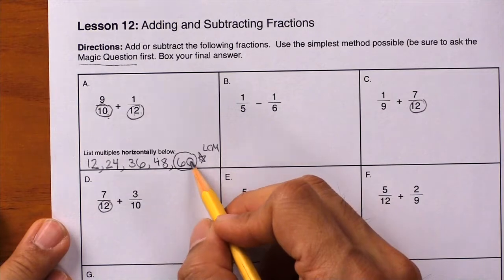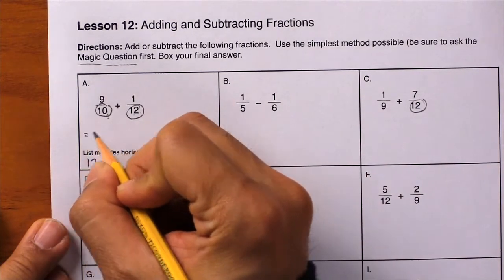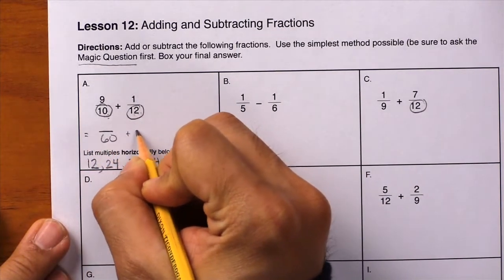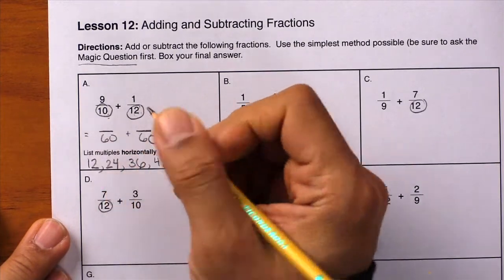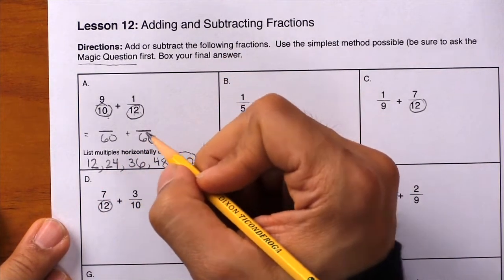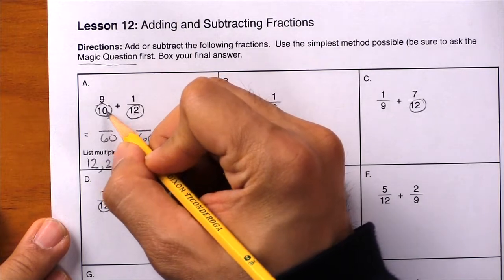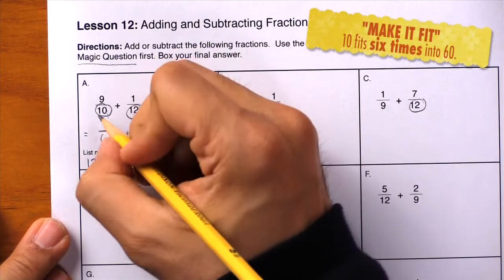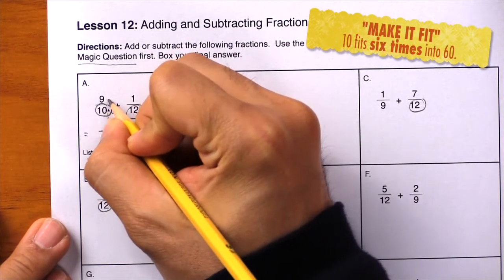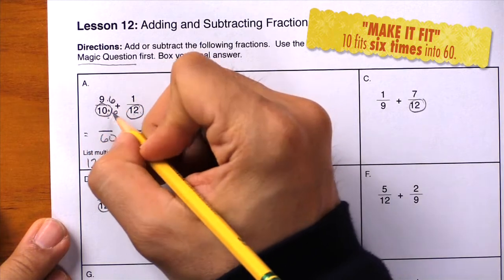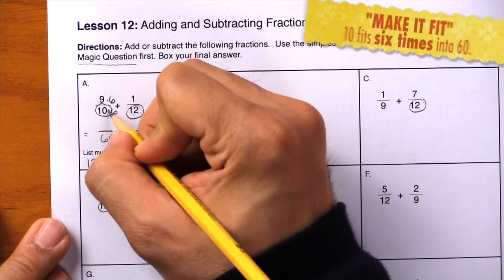So let's rewrite the problem. We'll write blank over 60 plus blank over 60. Using multiplication, how did you get from 10 to 60? We multiplied by 6. Multiply by 6 in the numerator and denominator.